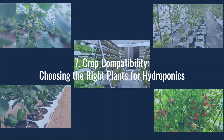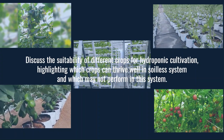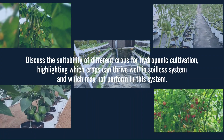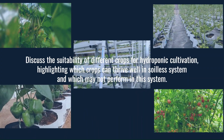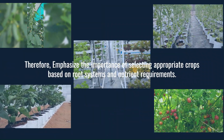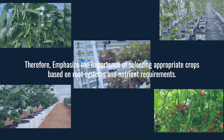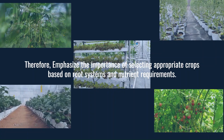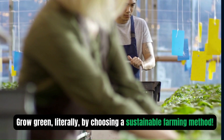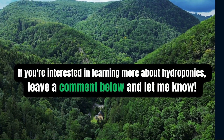The seventh drawback is crop compatibility: choosing the right plants for hydroponics. Different crops vary in their suitability for hydroponic cultivation — some thrive well in soilless systems while others may not perform as well. It is important to select appropriate crops based on their root systems and nutrient requirements. Grow green literally by choosing a sustainable farming method.